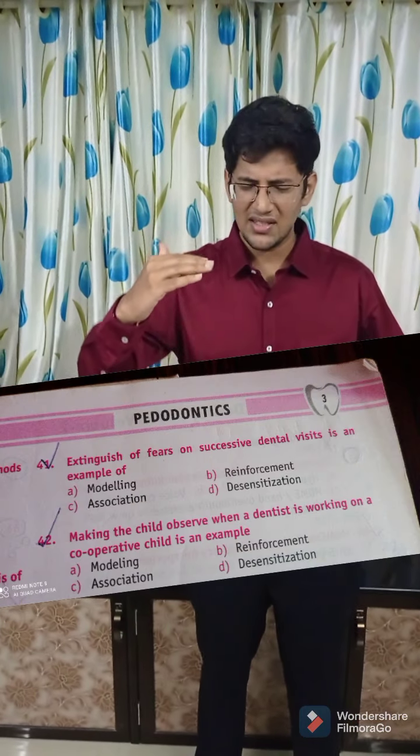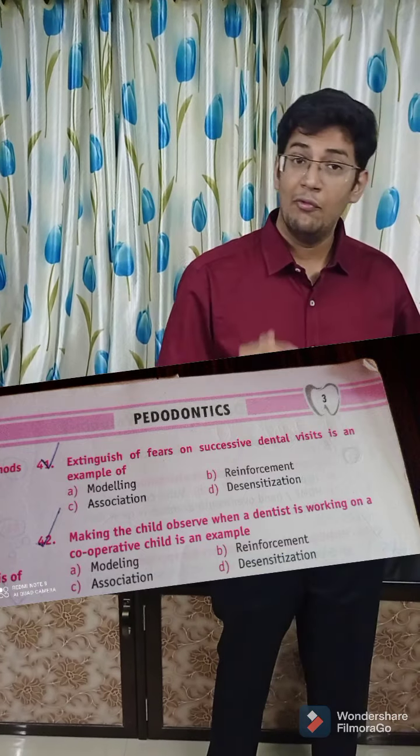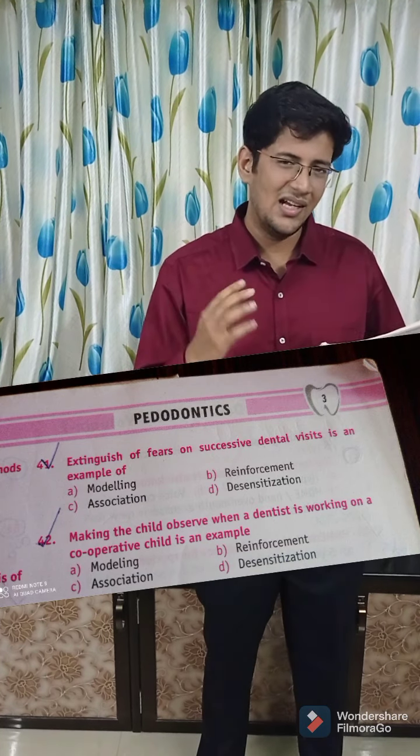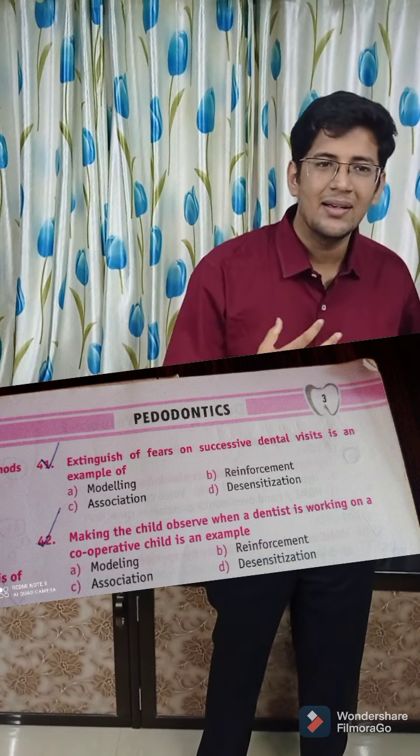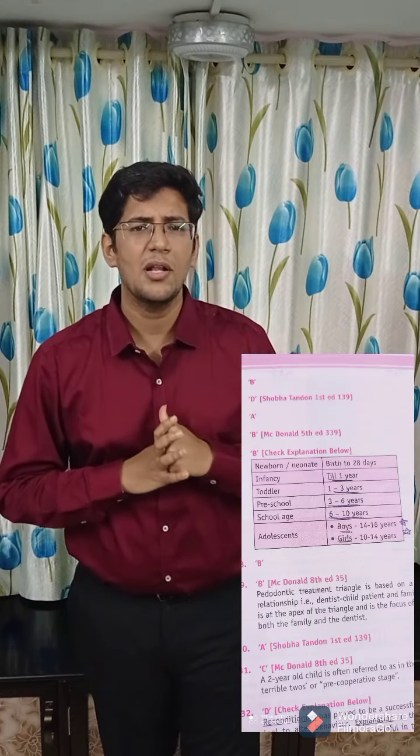The next question below asks: 'Making the child observe when a dentist is working on a cooperative child is an example of.' This is an example of modeling. If you understand that the dentist is trying to inculcate those things in the patient, then you know this concept is called modeling. And the concept where you gradually increase the stimuli on the pediatric patient — that is called desensitization. It is so simple. Then you go back to the explanations given in your Dental Pulse. If the explanation is not sufficient and you are still confused, there are reference books and page numbers given in your Dental Pulse — you can refer to those.